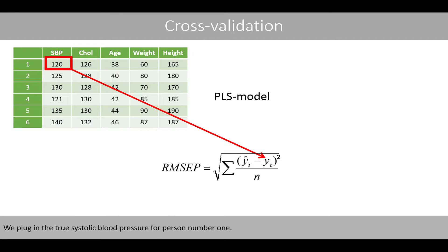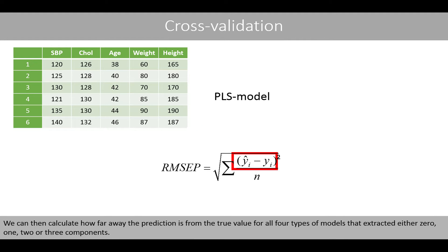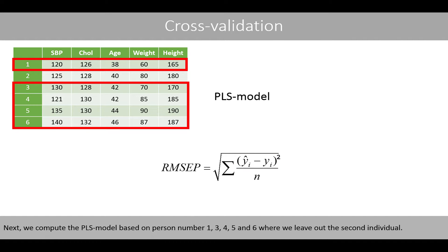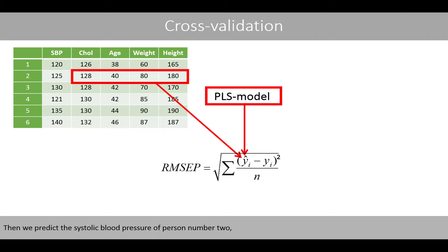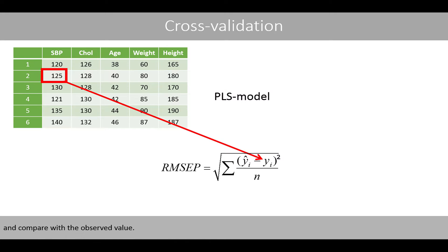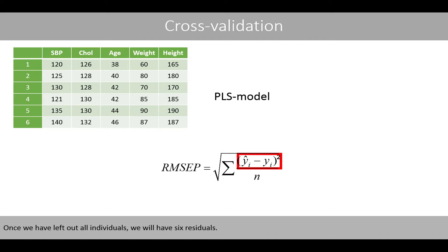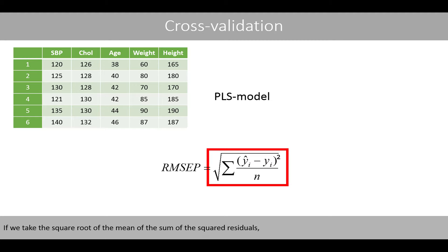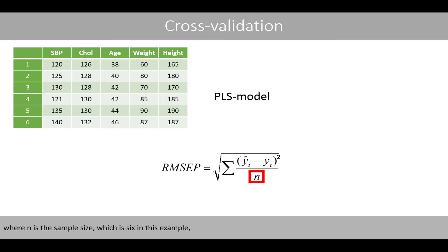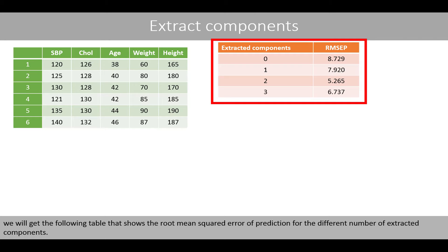We plug in the true systolic blood pressure for person number 1 and calculate how far away the prediction is from the true value for all model types that extracted either 0, 1, 2, or 3 components. Next, we compute the PLS model leaving out the second individual, then predict that person's systolic blood pressure and compare with the observed value. Once we have left out all individuals, we will have 6 residuals. Taking the square root of the mean of the sum of the squared residuals gives us the root mean squared error of prediction for each number of extracted components.